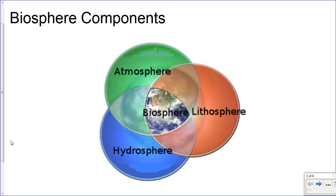You've learned about these different parts of the biosphere before. The atmosphere extends from the surface of the earth high up into the sky, and we can find living organisms there — not just the big things like birds, bats, and insects, but smaller things as well, like bacteria. The lithosphere refers to the earth's crust, and we can find living organisms on the surface but also far deep below through drilling cores.